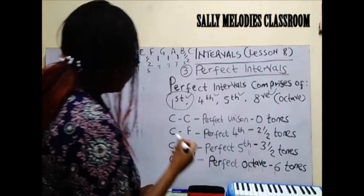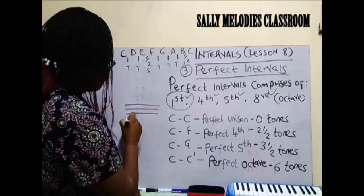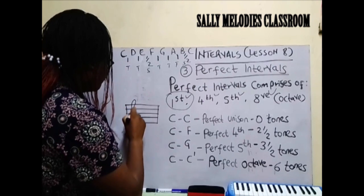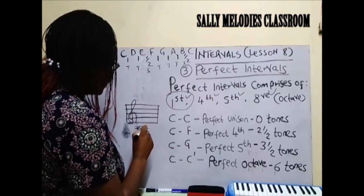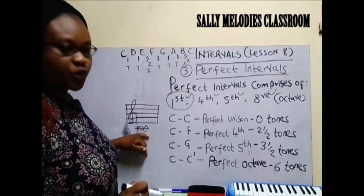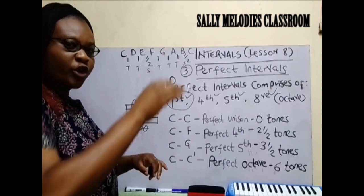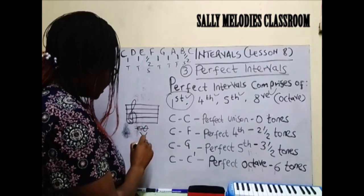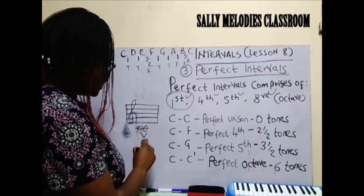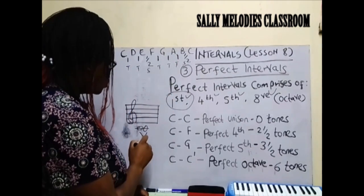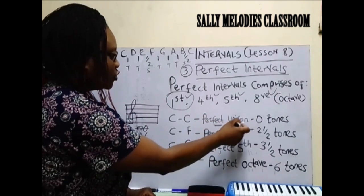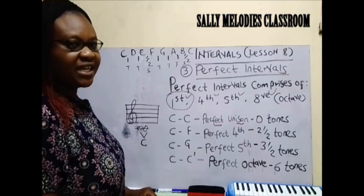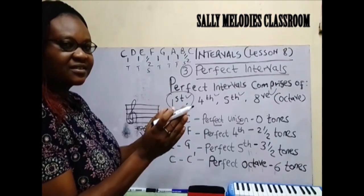For example, this is C. You have two voices singing this same note — that is a unison. You are not moving up or going anywhere. The two voices are doing C, and there is no distance between the two notes. That is what we call a perfect unison. It has zero tones because there is no distance that can be calculated.